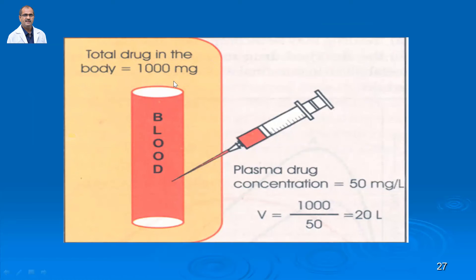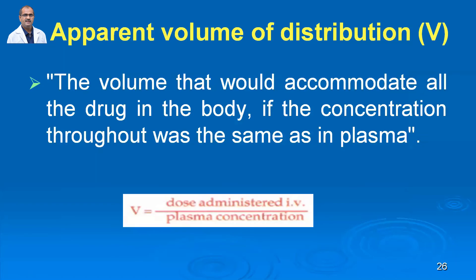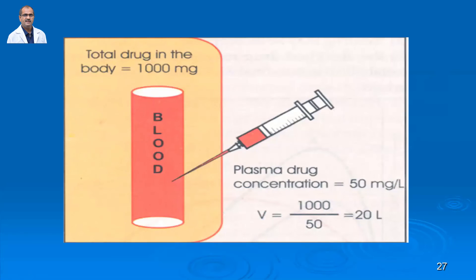As a calculation example: if 1000 mg of thiopentone sodium is administered and the plasma concentration is 50 mg/L, then the volume of distribution = 1000 mg ÷ 50 mg/L = 20 liters. This means the drug is distributed or diluted in 20 liters of body fluids — that is the volume of distribution.